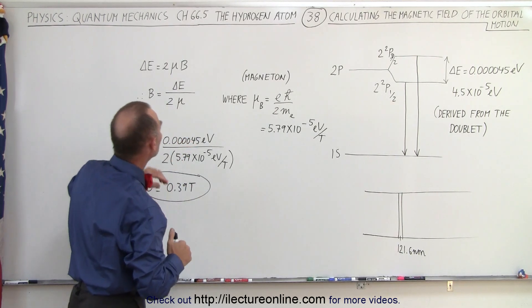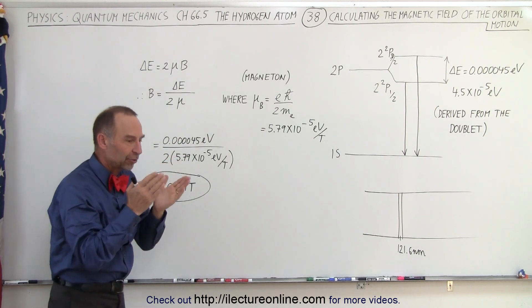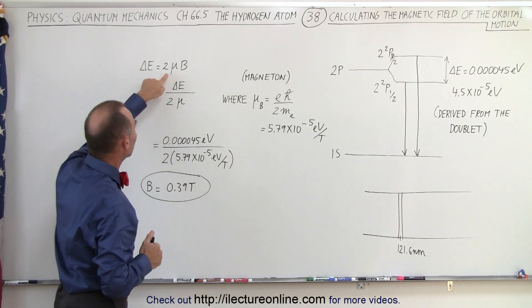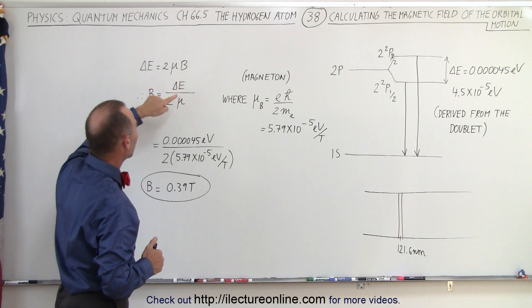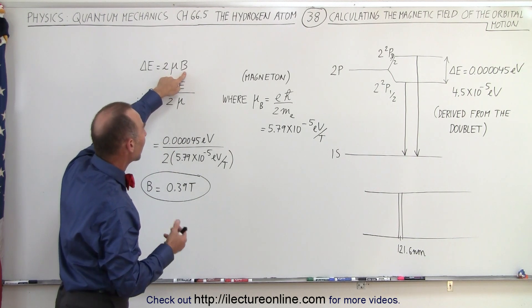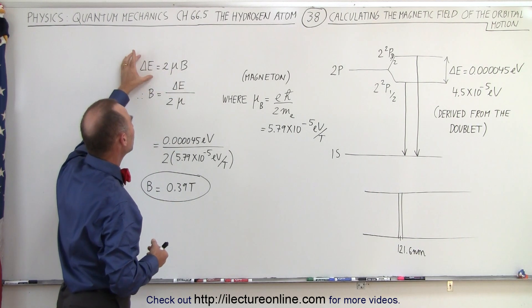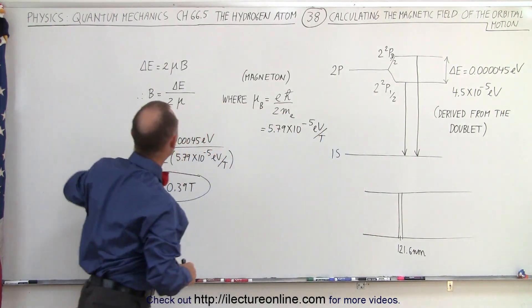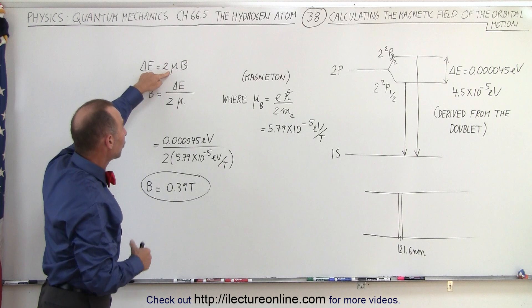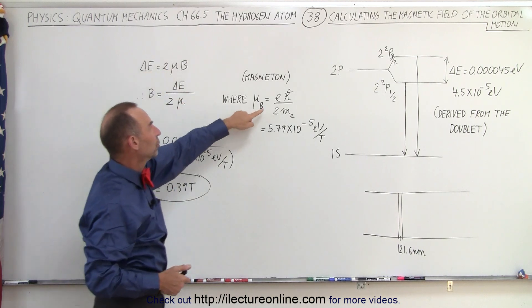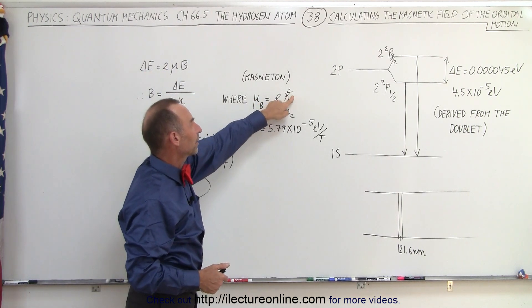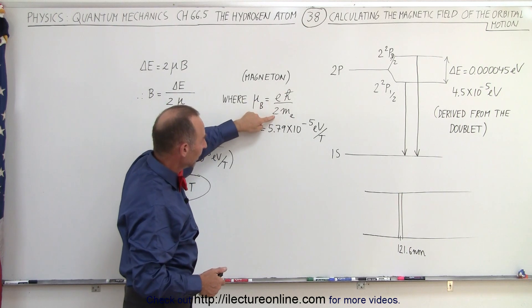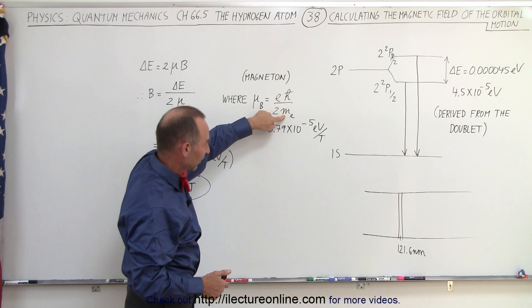Then they also knew that the energy caused by the interaction is what we call the Bohr Magneton multiplied by the magnetic field. Since we knew the energy difference between the two levels and we can calculate the Bohr Magneton, which is equal to the charge multiplied by Planck's constant divided by 2π divided by 2 divided by the mass of the electron.